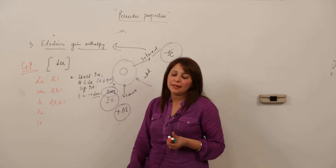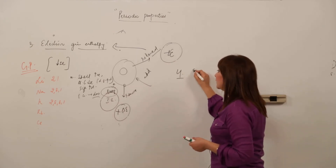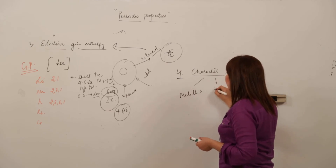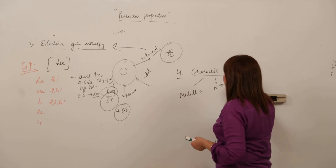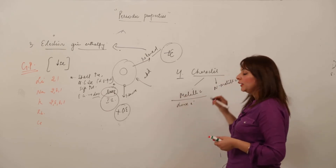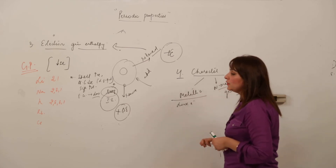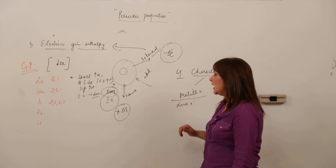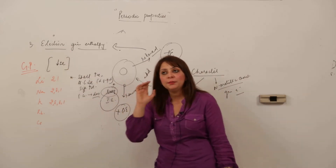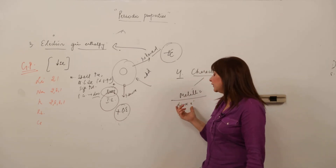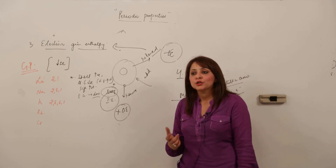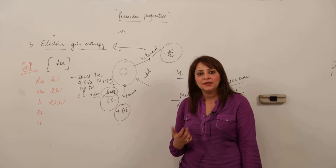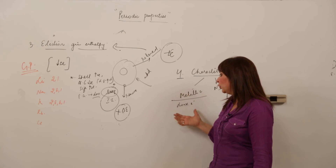The next periodic property is character — metallic character and non-metallic character. Metallic character means tendency to lose electrons, and non-metallic character means tendency to gain electrons. As we move down a group, size increases and nuclear charge decreases, so electrons are lost more easily — meaning metallic character increases down the group.